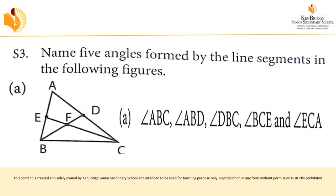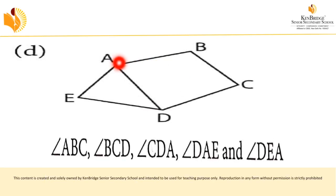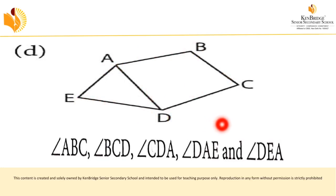For the next figure, five angles can be named: angle ABC, angle BCD, angle CDA, angle DAE, and angle DEA.